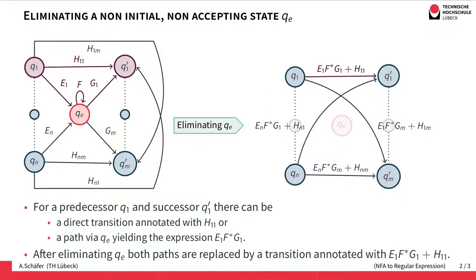We annotate it with E1 F star, because we can take this loop a couple of times, and then G1. So we end up with E1 F star G1 or H11, because we could have taken the direct route in the first place.